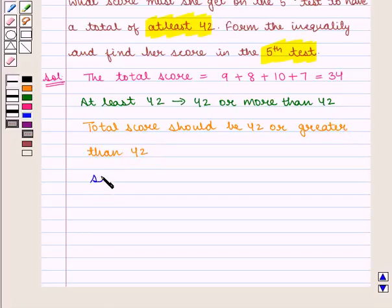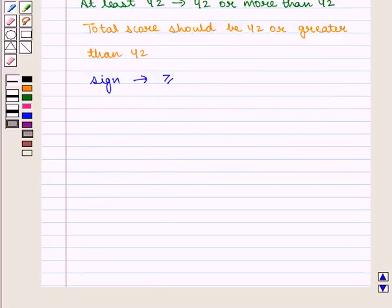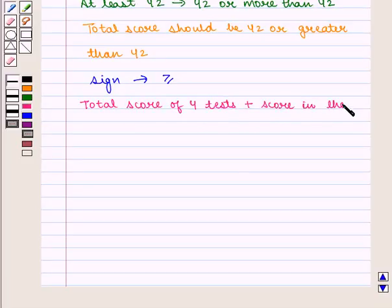Therefore, the sign of inequality will be greater than or equal to. And according to the question, total score of 4 tests plus score in the 5th test should be greater than or equal to 32.